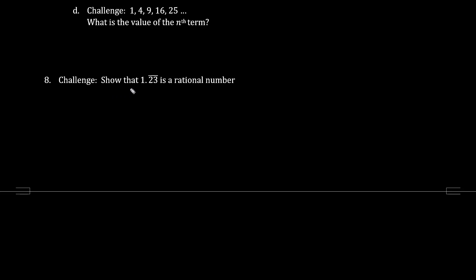Let's try this challenge problem. Let's show that 1.23 repeater is rational. So this repeating portion, let's let x equal 0.23 repeater. So we have x equals 0.23 23 23 23 23 23 and the pattern continues on and on. So when we multiply by 100, the decimal moves 2 to the right. So we say 100x equals 23.23 23 23 23 23 23 etc.